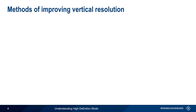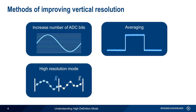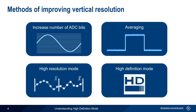There are four main ways in which the vertical resolution of an oscilloscope can be improved. These are increasing the number of ADC bits, averaging, high resolution mode, and high definition mode. We'll briefly cover the first three methods, and then spend the remainder of this presentation discussing high definition mode — both how it works, as well as how it's different from the other three methods.